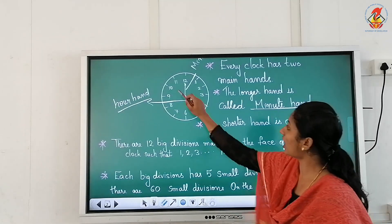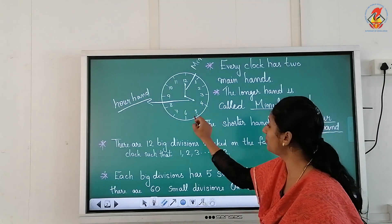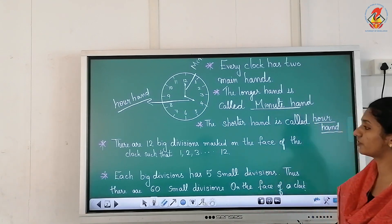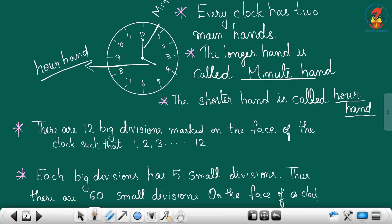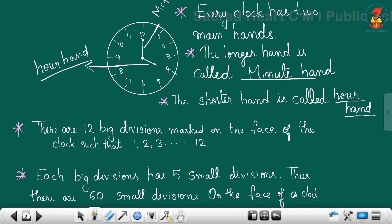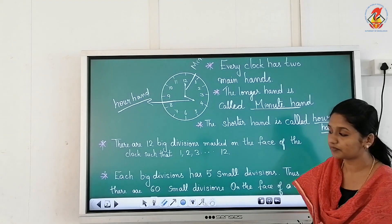There are twelve big divisions marked on the face of the clock: one, two, three, four, five, and so on up to twelve. Those are the big divisions marked on the face of the clock.